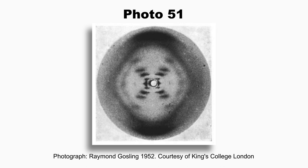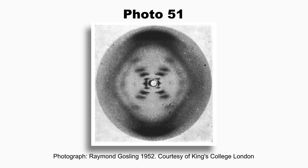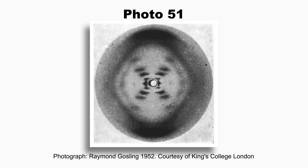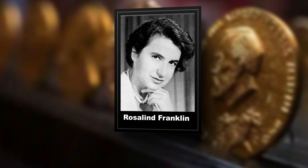Using this image, famously called Photo 51, Watson and Crick combined the work from previous centuries to determine the structure of DNA once and for all. The Nobel Prize in Physiology and Medicine in 1962 was awarded to Watson, Crick, and Wilkins. If you think there's an obvious omission, you're correct — Rosalind Franklin had passed away four years earlier of cancer from the X-ray diffraction experiments and was not awarded posthumously.